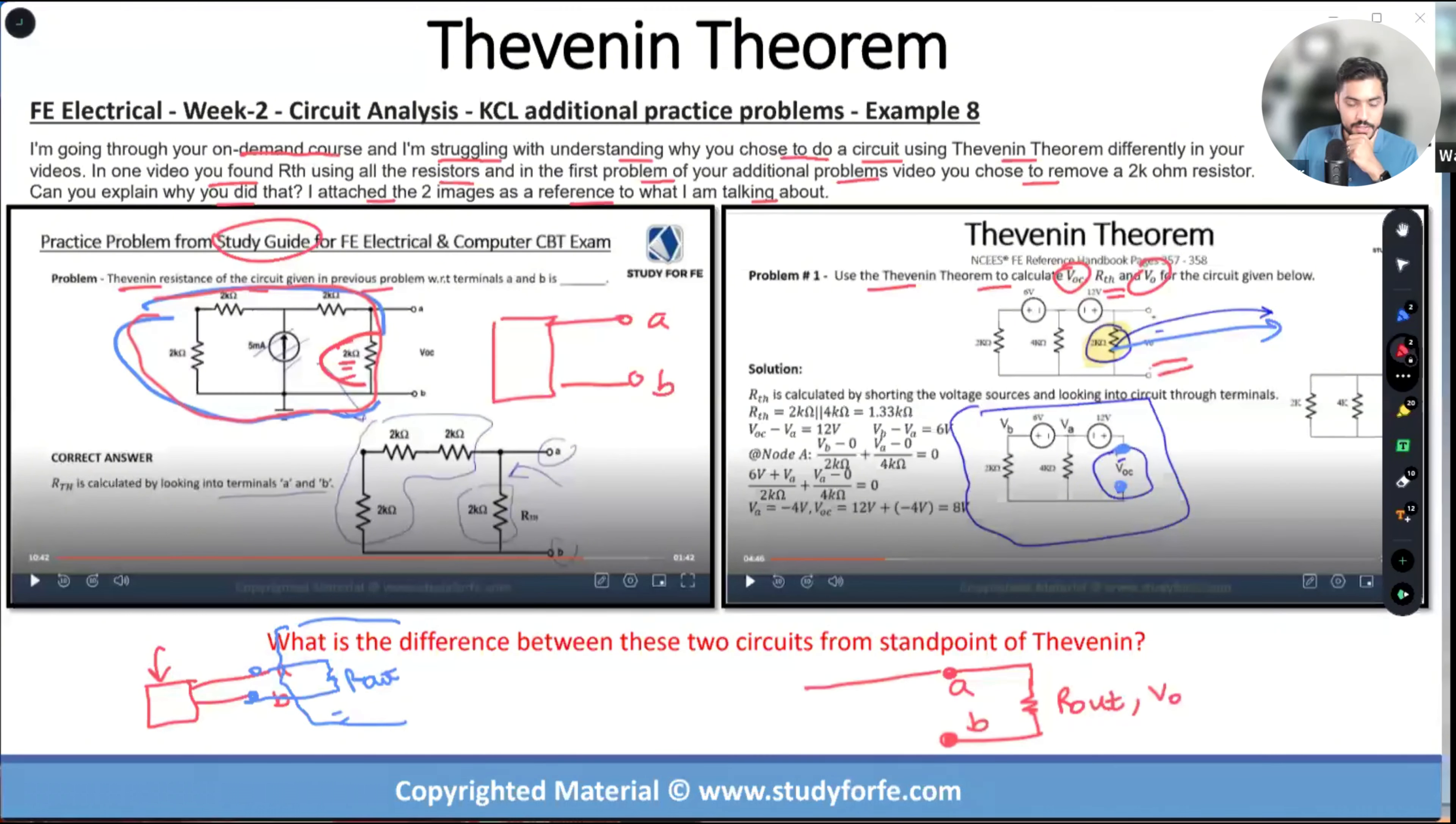In this circuit what you have is your R Thevenin, R output, because it's identified as v output, the voltage across it as v output. To this you have a and b, and to this you have your Thevenin equivalent circuit. So when I'm solving for this piece, I should not include my R output in it. That's why I take the R output and then bring the terminals here.